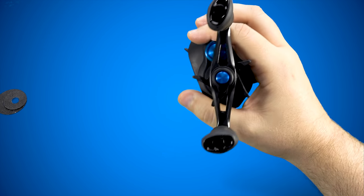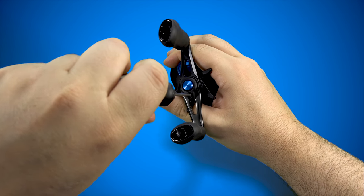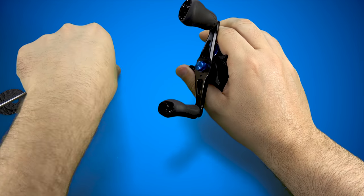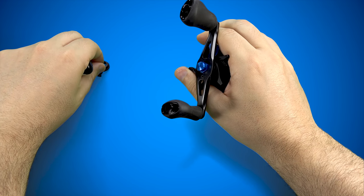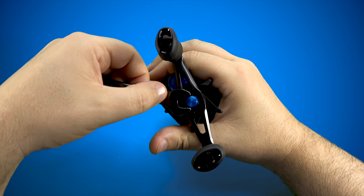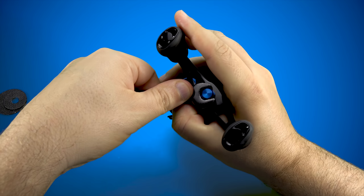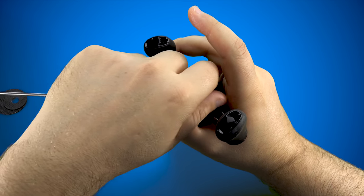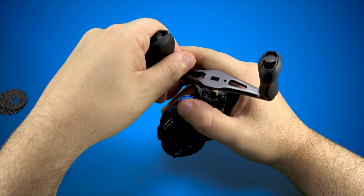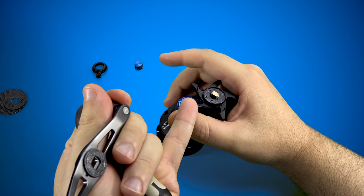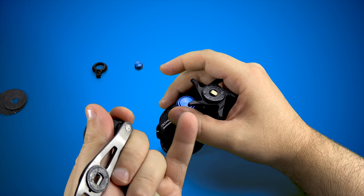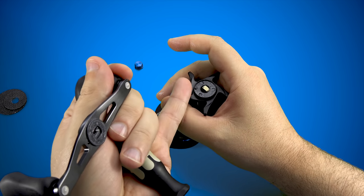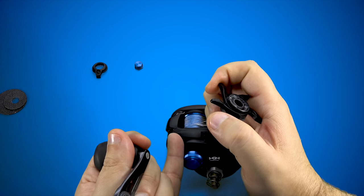Next up, we're going to grab our size zero screwdriver and our 10mm wrench. On a right-handed reel, we're going counterclockwise. It's going to be opposite on the left-hand version. We're going to lift this off. Make sure you keep pressure on this drag star because it can bounce out. This click plate has a detent here.